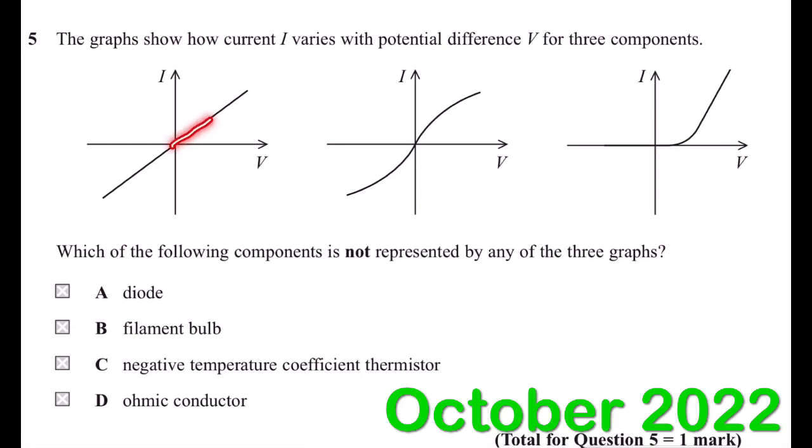Firstly, there is a straight line passing through the origin. This means that the gradient is constant, which means that the resistance is going to be constant. So this one is describing the ohmic resistor.